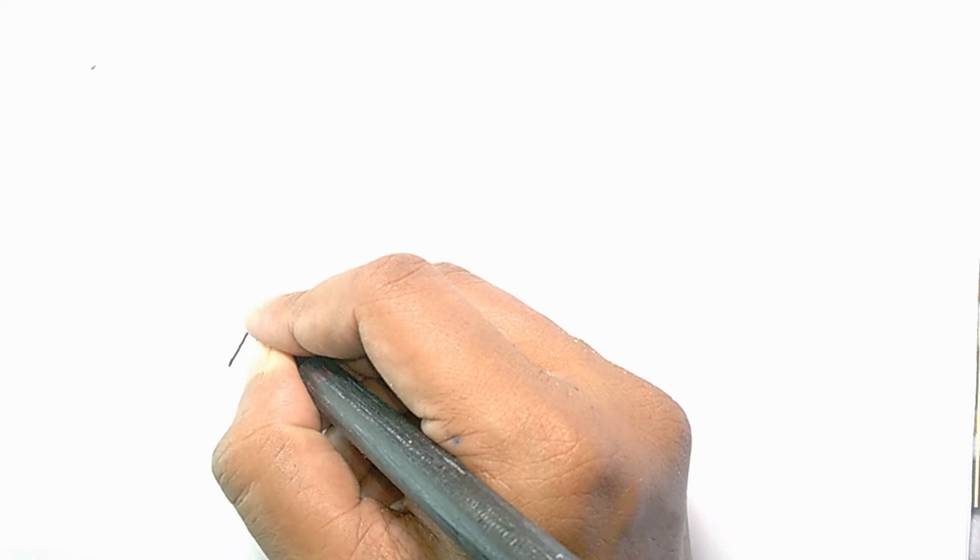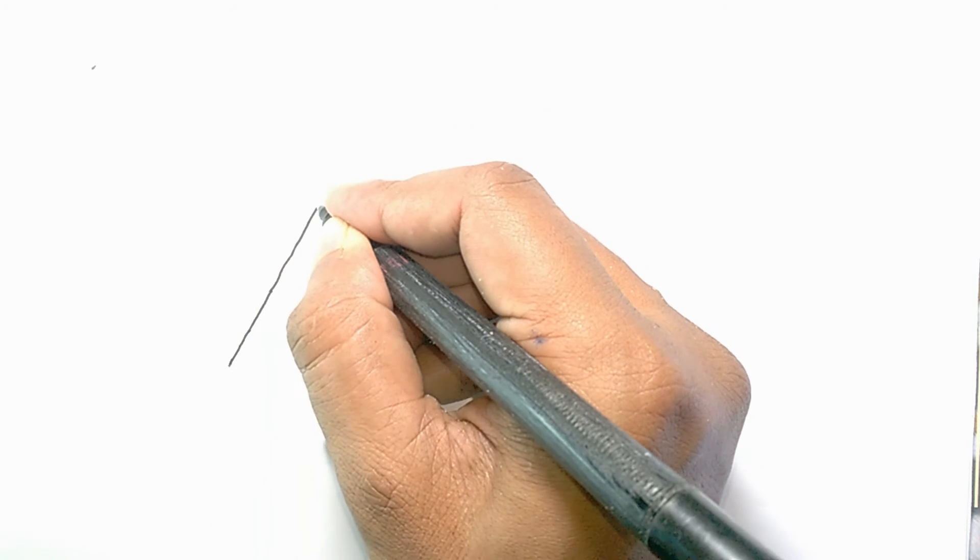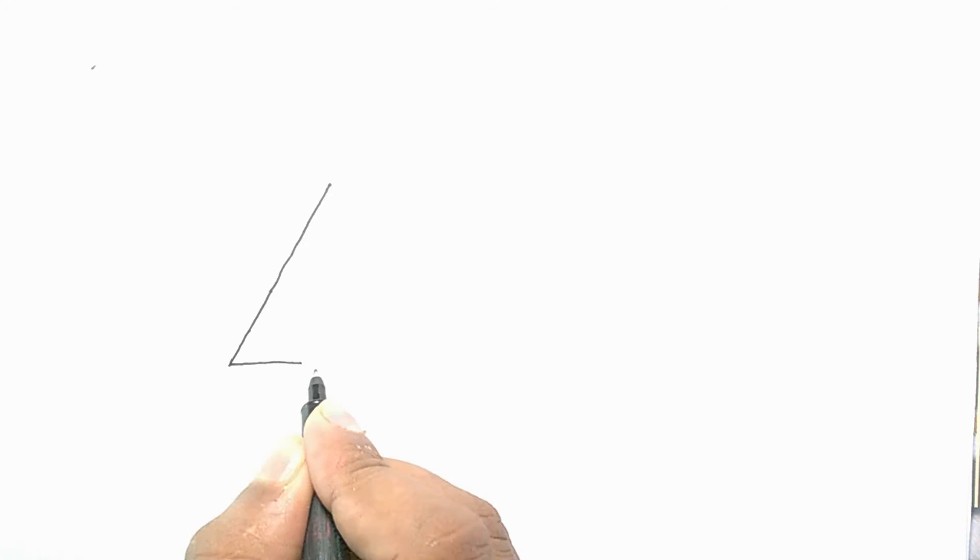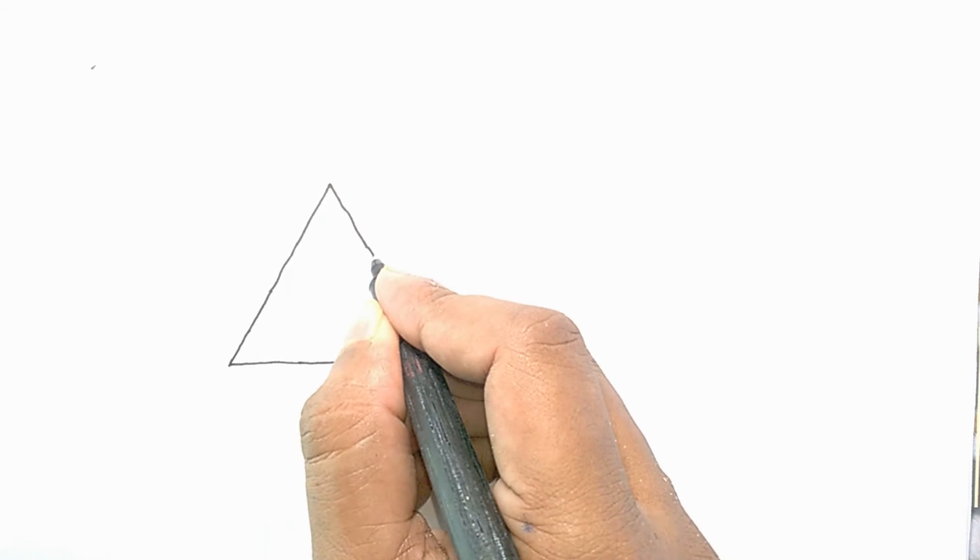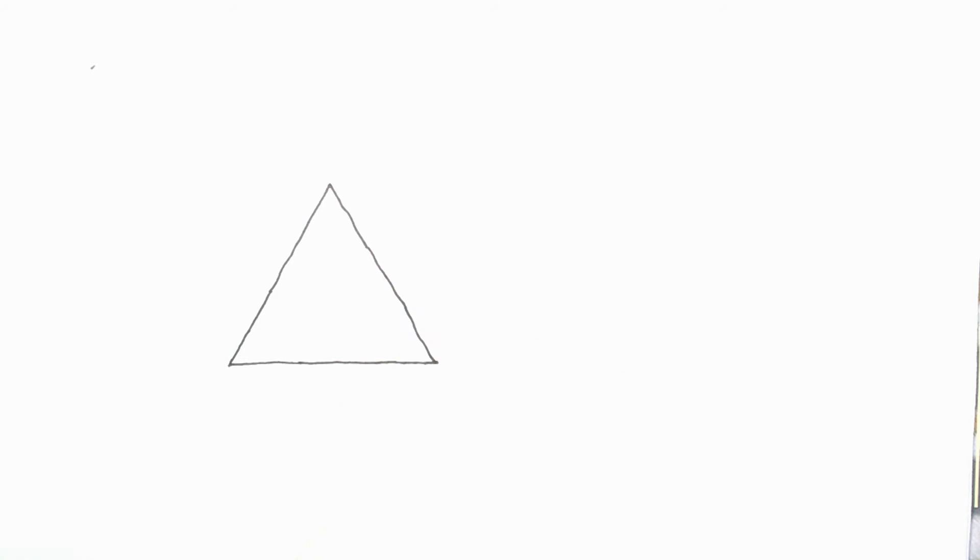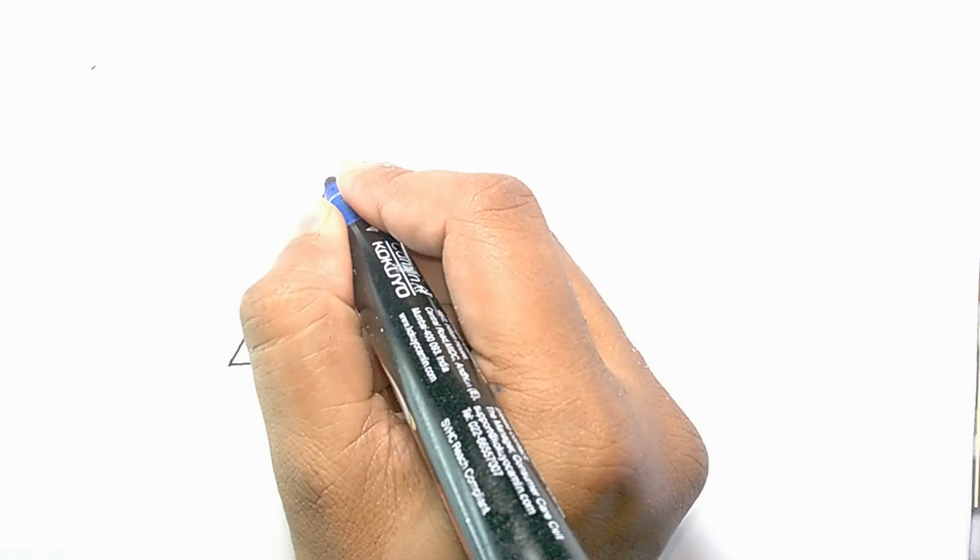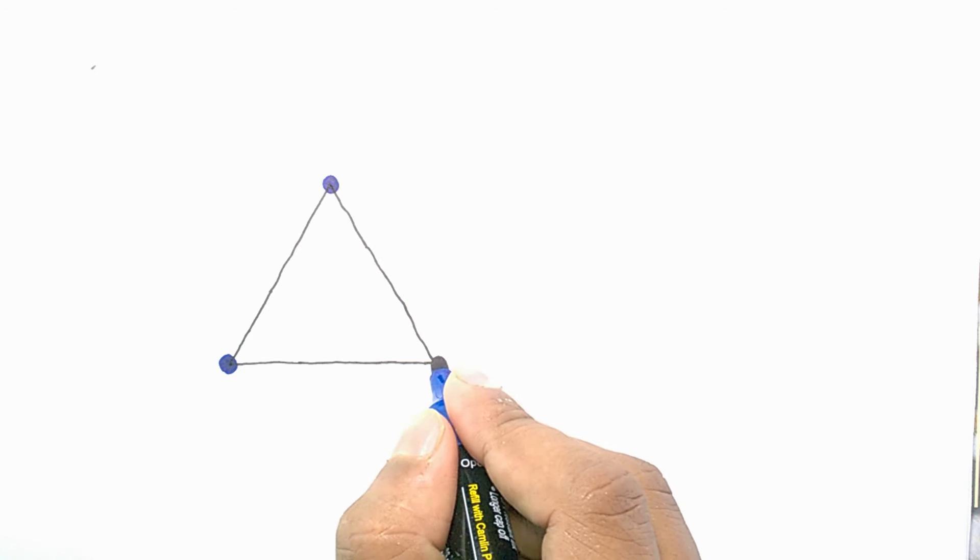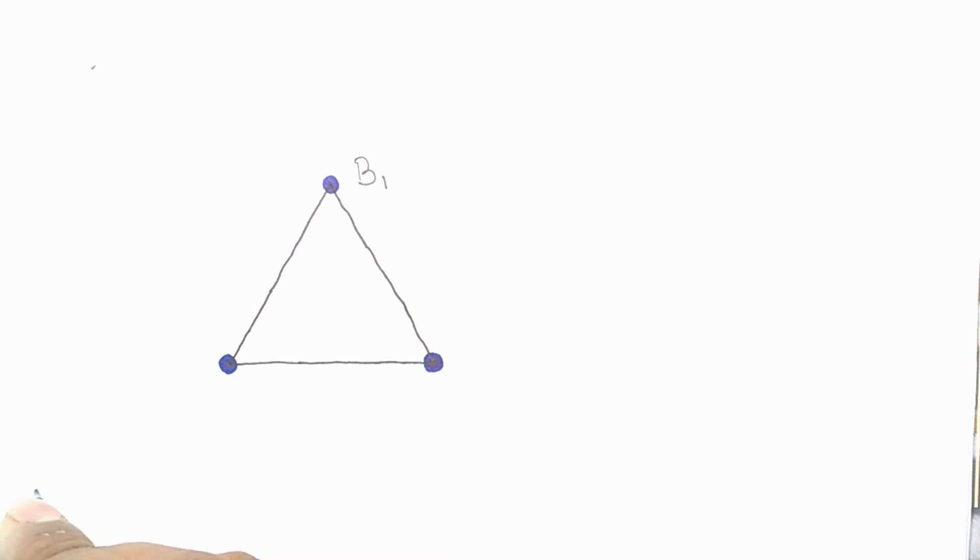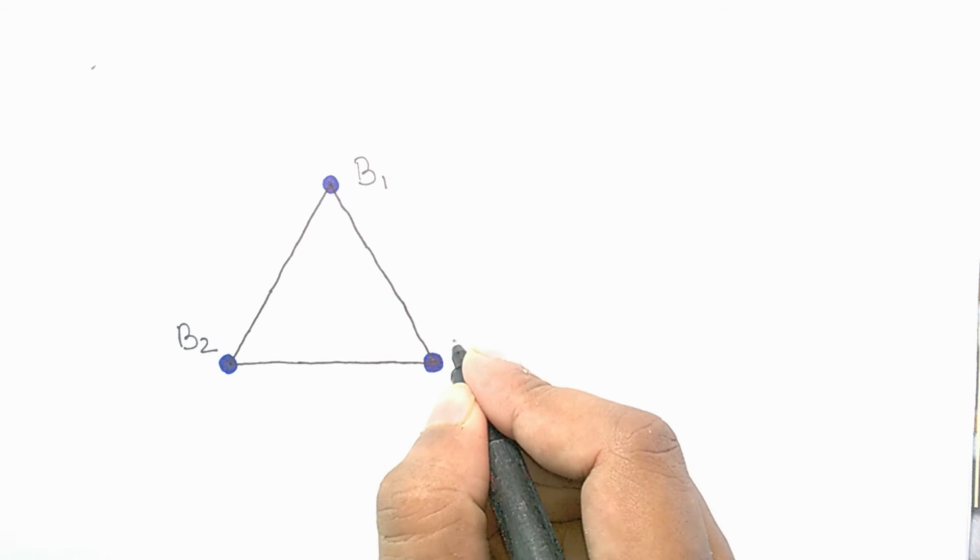So let's move on to our today's problem. In today's problem we have an equilateral triangle. On the vertices of this triangle we have three bodies. Let us give them a name—the body on the top is body one, the body on the left bottom corner is body two, and the body on the right bottom corner is body three.